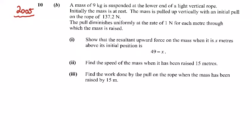This is the 2005 differential equation question 10b. A mass of 9 kg is suspended at the lower end of a light vertical rope. Initially the mass is at rest, 9 kilos. Let's assume this is it here. 9g going down that way, mg going down.